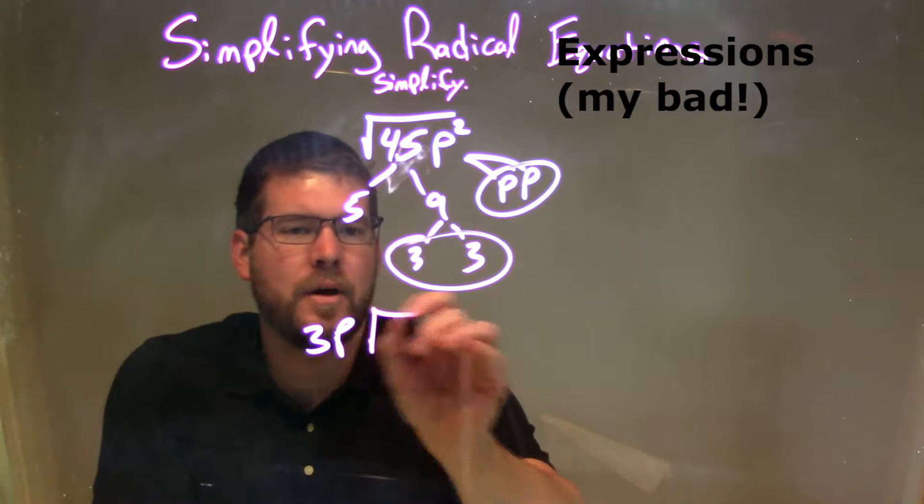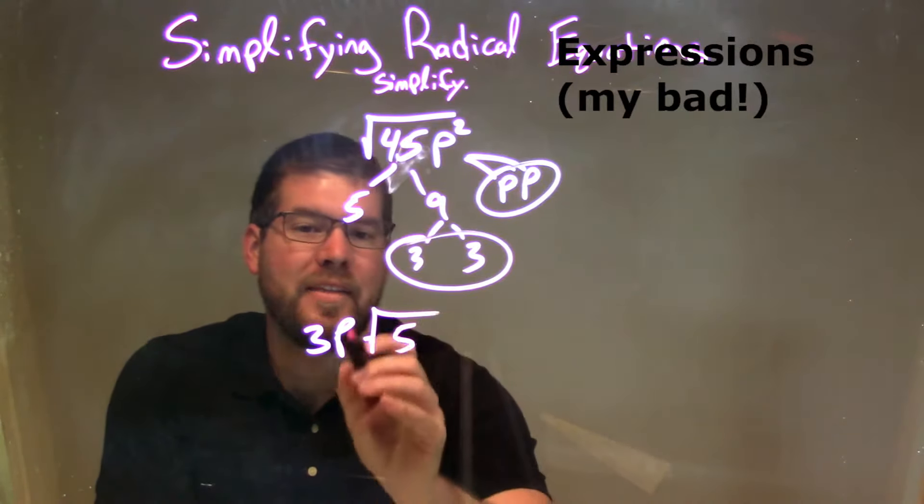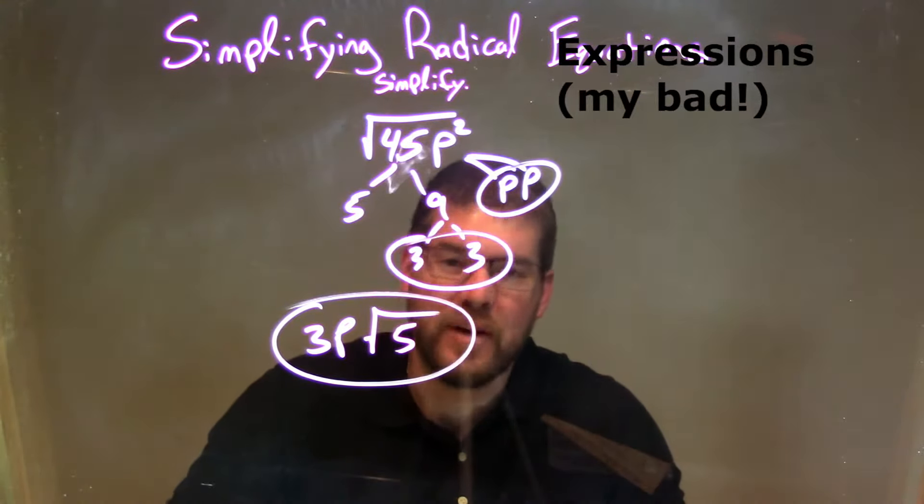The pairs go outside of my square root, and what's left over are the singles, which is just that 5. That is actually our final answer. Pretty simple and quick. 3p times the square root of 5.